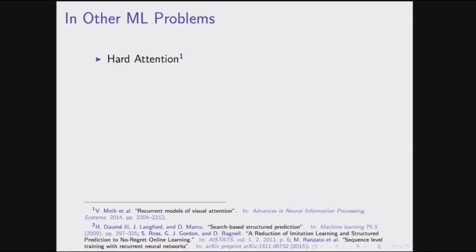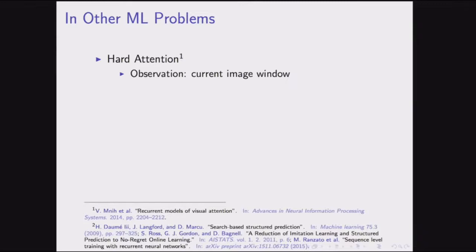There are also many machine learning problems where people have applied reinforcement learning. One example is attention: you don't want to look at the whole input at once, just focus on part of it. With a large image, you might crop out a region and do detection there. The observation is your current image window, the action is where to look or crop, and the reward is whether you make a classification error.